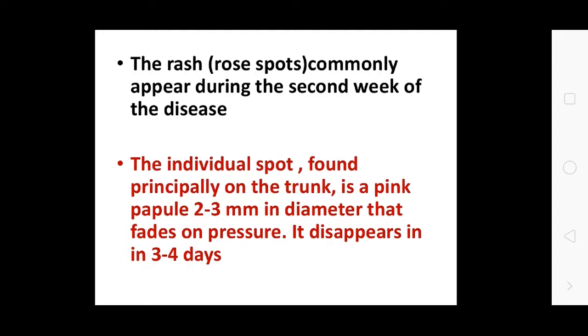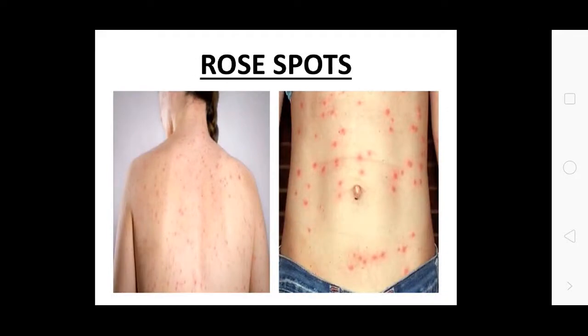The rose spots are found principally on the trunk, pink-purple, 2–3 mm in diameter, that fade on pressure and disappear in 3–4 days. These spots appearing with severe presentation indicate typhoid fever. The rash appears in the second week and disappears automatically in 3–4 weeks.